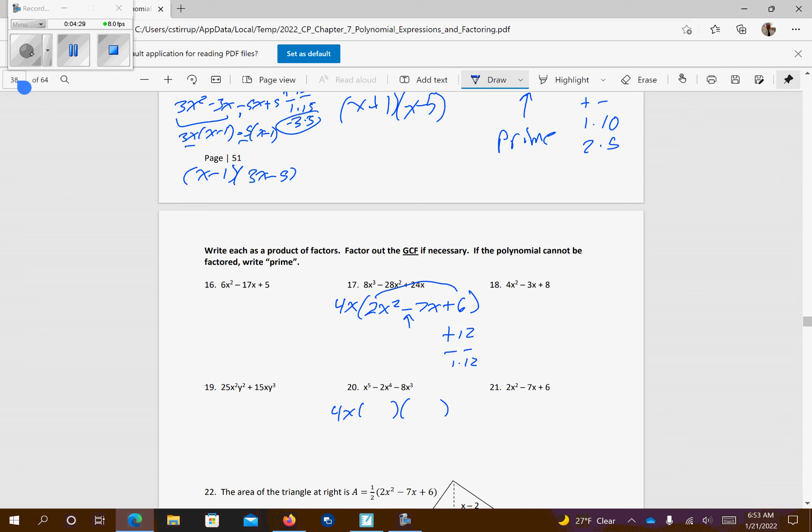So 1 and 12, 2 and 6, 3 and 4. We need to add up to negative 7, both being negative. So it's negative 3 and negative 4. So I have 2x squared minus 3x minus 4x plus 6. I'm factoring x out, so I get 2x minus 3. This is a negative sign right here, so I can factor a negative 2 out. So I get 2x. Make sure you change the sign on the 6. So 2x minus 3. Remember the 4x we originally factored out. And then I have x minus 2 left.